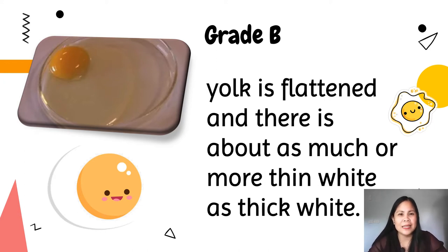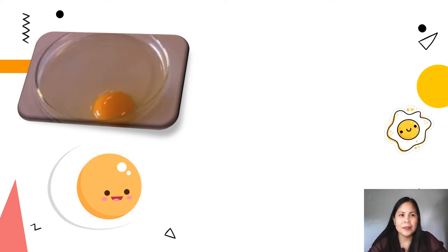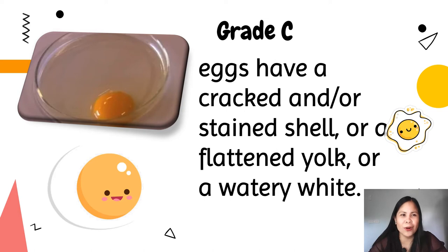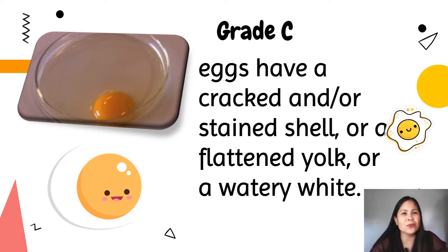Grade B eggs shouldn't be used when the egg is used to provide a high level of structure in the food item. And for Grade C, the eggs have a cracked and/or stained shell, a flattened yolk, or a watery white. These eggs are only used in the production of processed egg products.